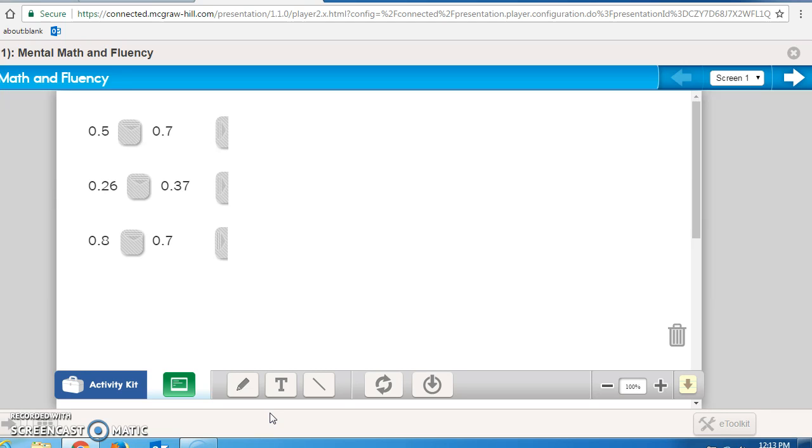But let's start first with our mental math and fluency. Greater than, less than, or equal to. 5 tenths is what to 7 tenths? Good. Less than. 5 and 7 are both in the same place value. Tenths. 5 is less than 7.